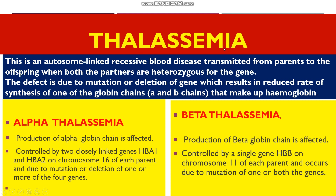Another hemoglobin-based disorder is thalassemia. Like sickle cell anemia, thalassemia is also an autosomal recessive disorder — the mutated gene is on the autosomes, the gene is recessive, and both parents must be heterozygous to produce a thalassemic individual. Thalassemia is of two types: alpha thalassemia, controlled by two closely linked genes (HbA1 and HbA2) on chromosome 16, and beta thalassemia, controlled by a single gene (HbA2) on chromosome 11. In alpha thalassemia, production of the alpha globin chain is affected; in beta thalassemia, production of the beta globin chain is affected.